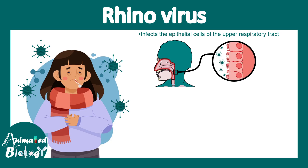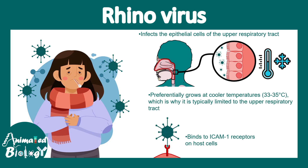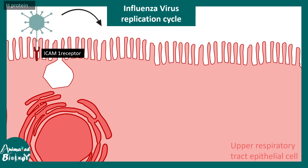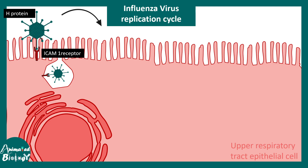Rhinovirus infects the epithelial cells of the upper respiratory tract. Viral infection is augmented by cold temperature. Rhinovirus binds to ICAM-1 receptors on the host cell, which leads to receptor-mediated endocytosis of the virion particle. There is then a change in pH in the endosome, causing the capsid to dismantle and release the genomic material — positive-stranded RNA.